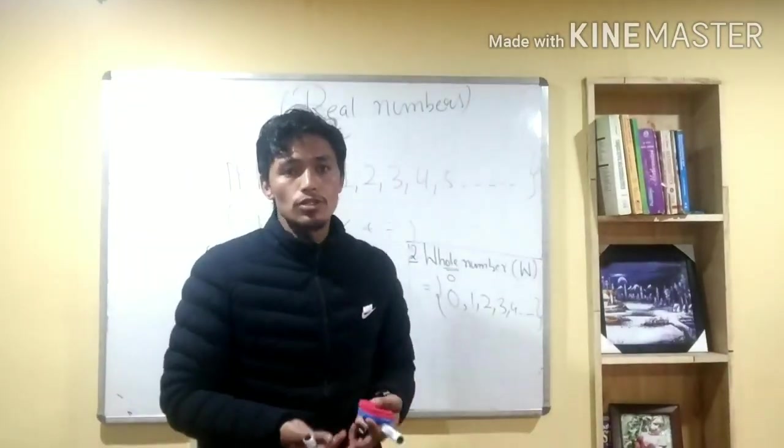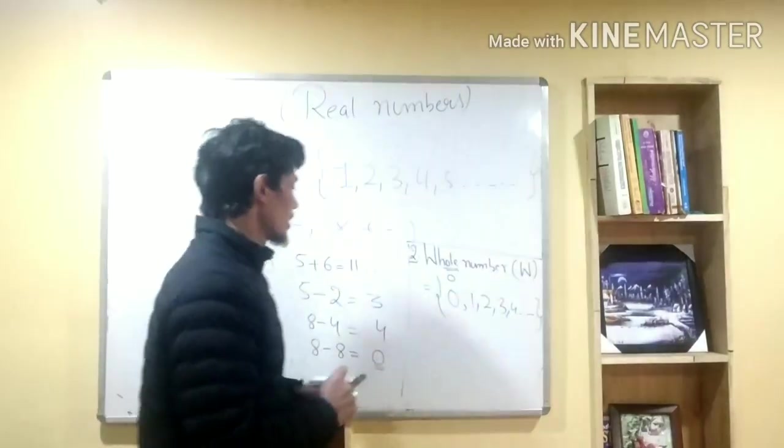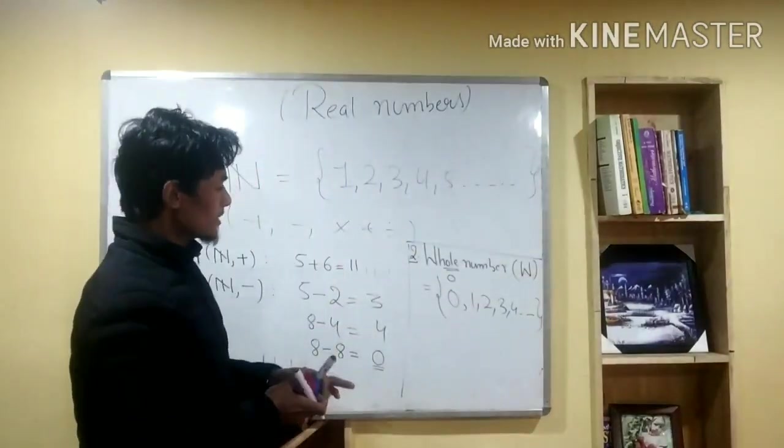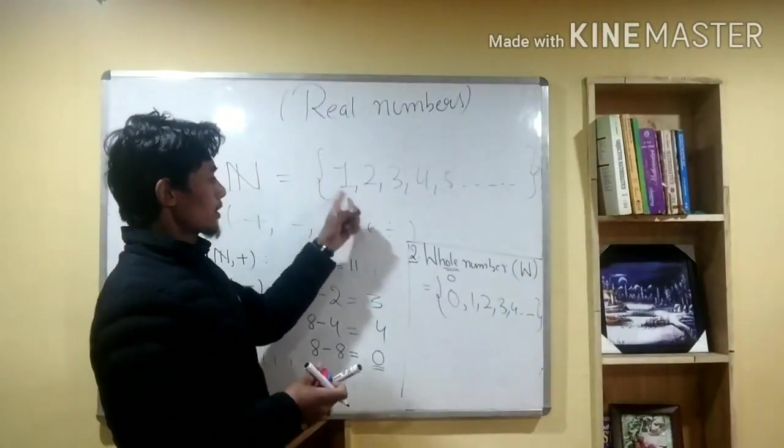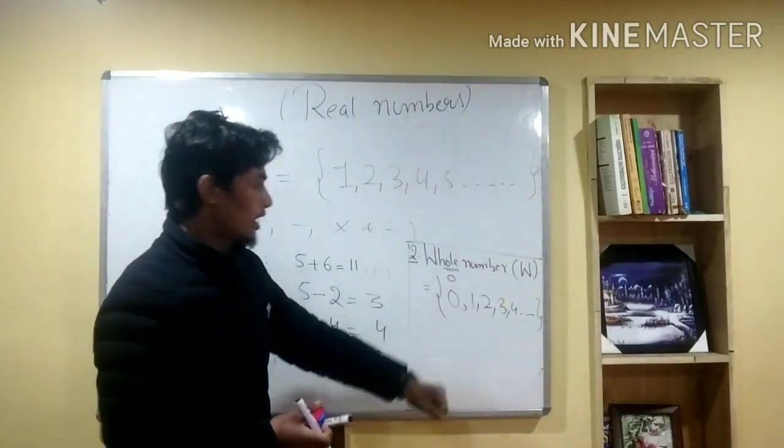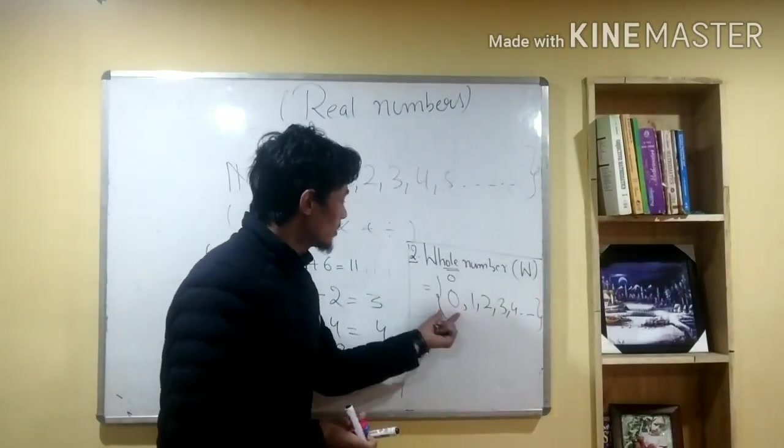Natural numbers don't include zero because we don't do counting with zero. So the whole number starts from zero.